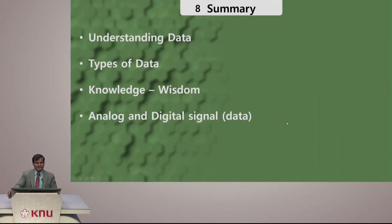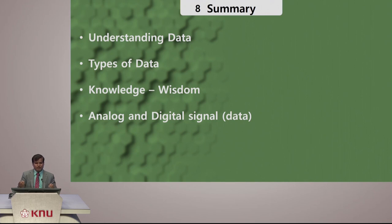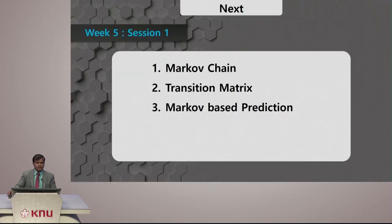That is what we have for today. We talked about various ways to understand data, the different types of data — qualitative, quantitative, structured, and unstructured — and why data is important. Data in itself is just information, but this information can be converted into knowledge and eventually you can extract wisdom out of it. That is one of the prime concerns — this understanding of data is one of the basic things we need to understand in this data science course. In the next lecture we are going to look at the Markov chain process, transition matrix, and Markov-based predictions. Looking forward to seeing you there — until then, goodbye.